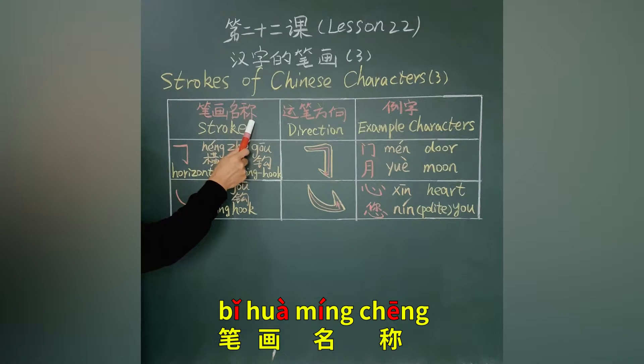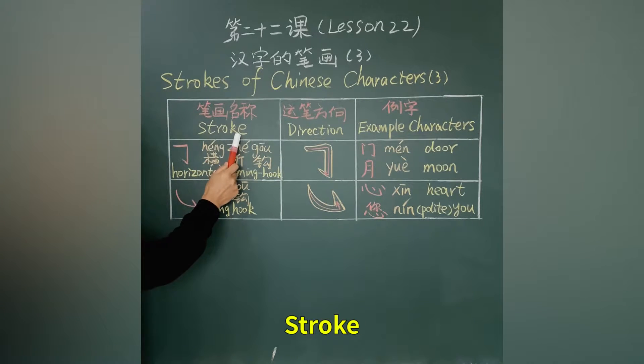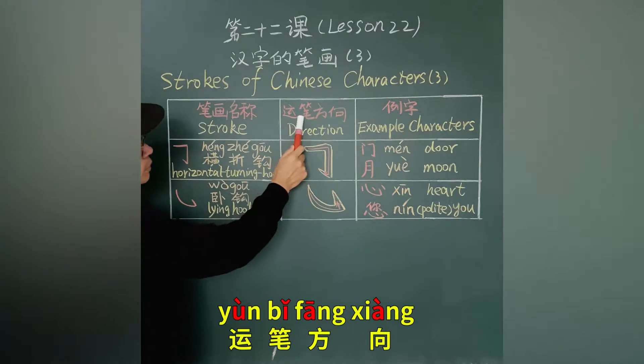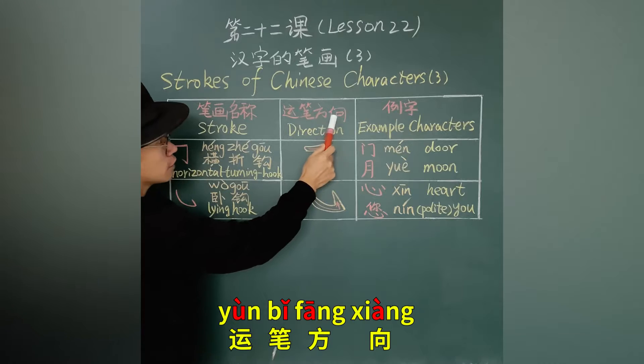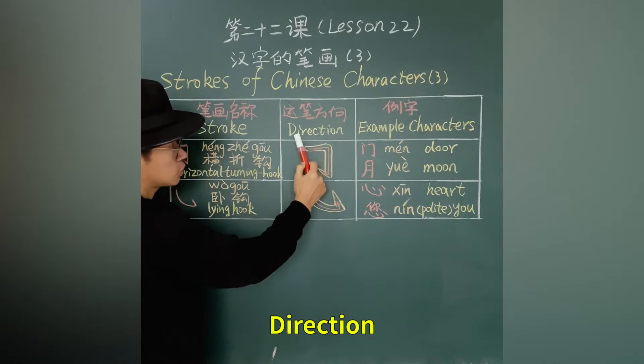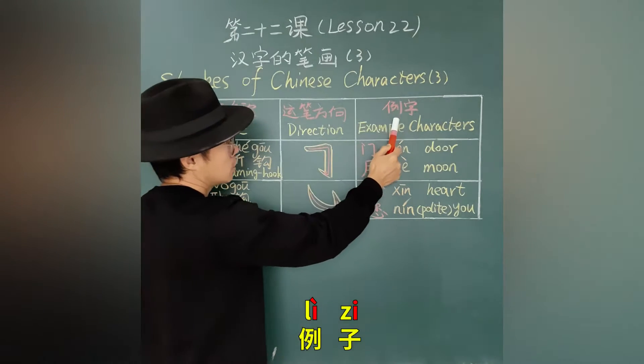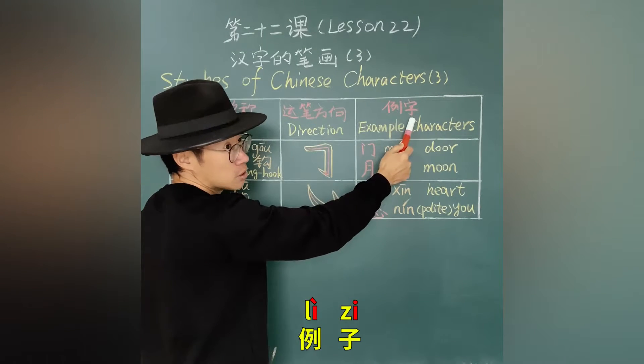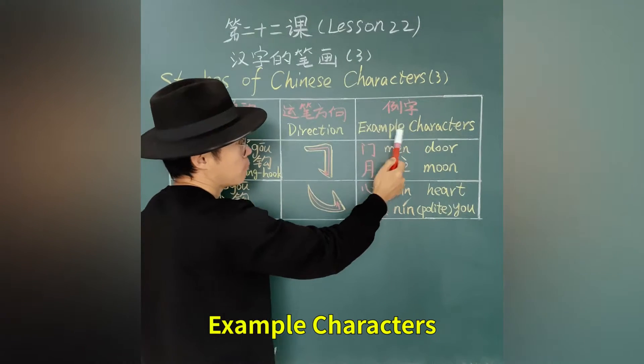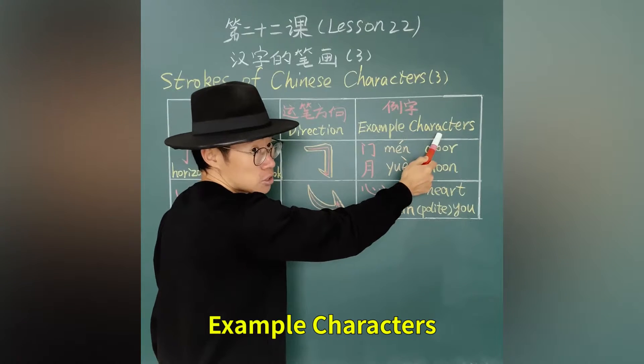笔画名称 (stroke name), 运笔方向 (direction), 例字 (example characters).